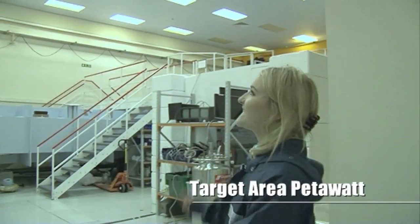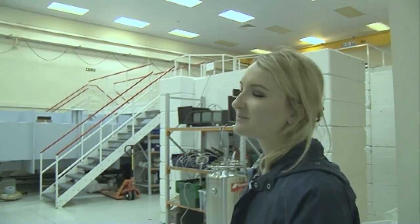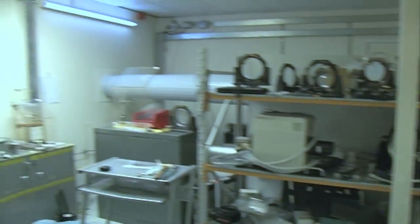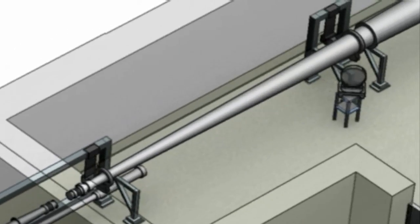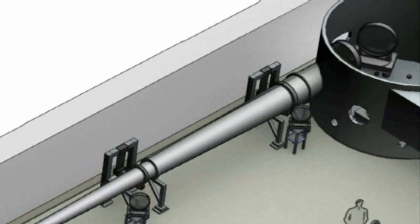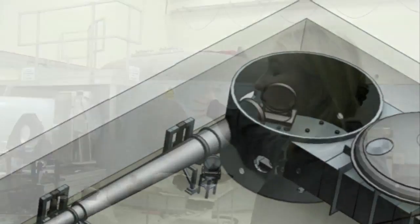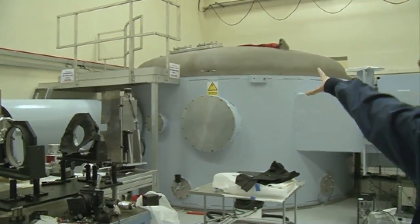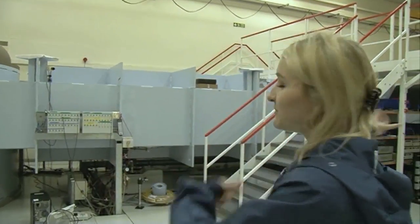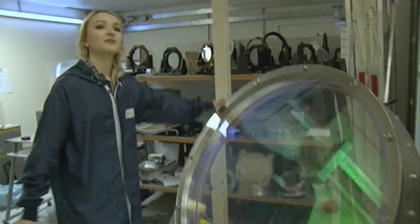So this is our Vulcan Petawatt target area. If I spin you round, you'll see from out of that wall is a tube and that's where the laser comes in, right through into this chamber here. And you'll see at this point, it's almost a metre wide. And inside there, there are going to be mirrors that are going to be able to turn the laser around the room. This is just an example of one of the metre diameter mirrors that we have inside of those chambers.